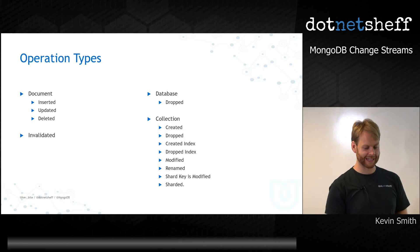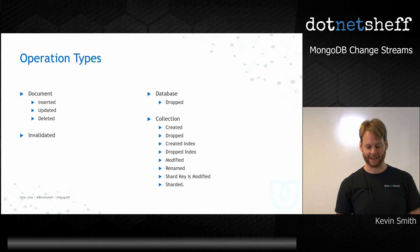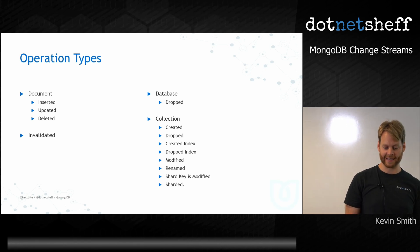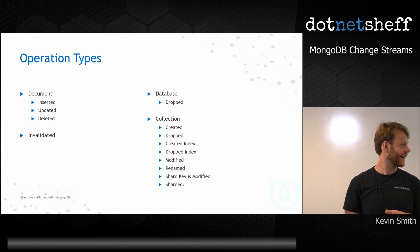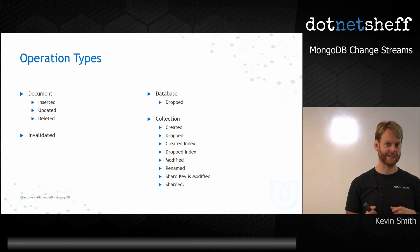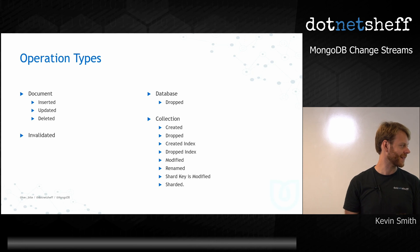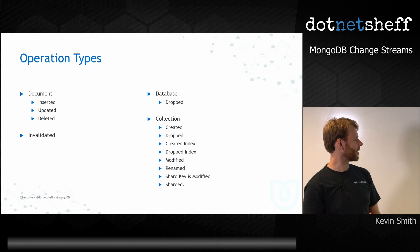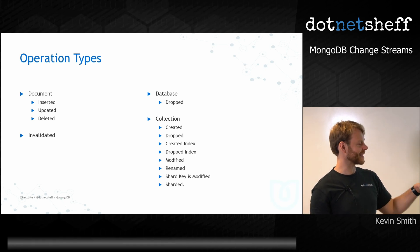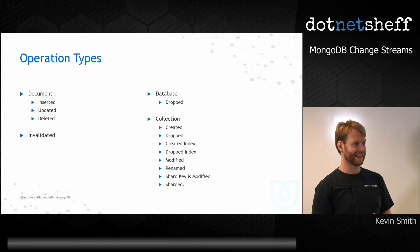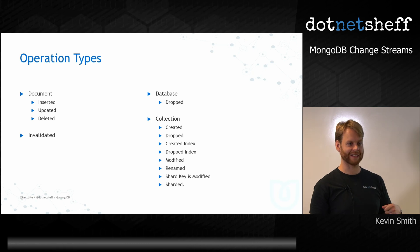These are all the operation types you can work with. On documents you can check when they're inserted, updated, and deleted. There's also when the database is dropped. For a collection, you have when it's created, dropped, any index changes, when the collection is modified, renamed, or if the shard key is modified or added. There's also 'invalidated' — for example, if you're listening to a collection and somebody drops it, that invalidates the change stream.